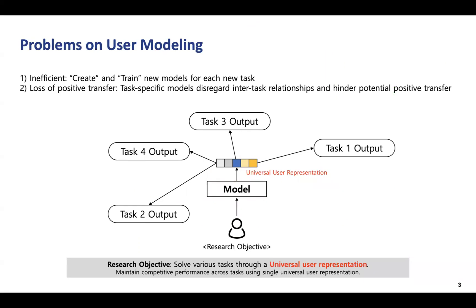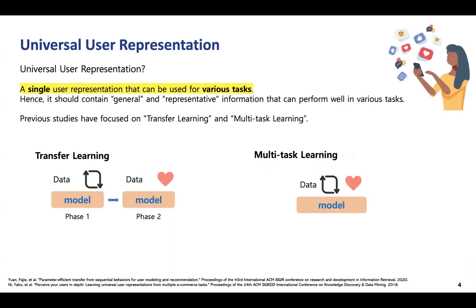Only using one model and one representation of a user, which is called universal user representation, we aim to maintain performance across tasks. The universal user representation contains general and representative information that can be used for various tasks.